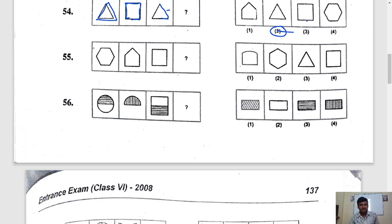See here. How many lines are there? 1, 2, 3, 4, 5, 6. 1, 2, 3, 4, 5. So 1, 2, 3, 4. One line minus. Here also one line minus. It will become triangle. This is the correct answer. These three are not the answers.